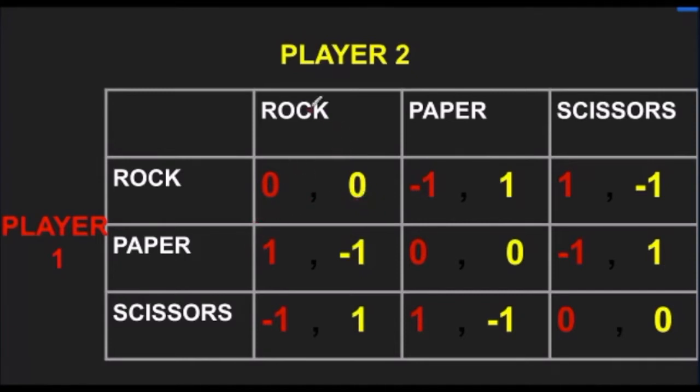But, let's suppose if player 2 chooses Rock and player 1 chooses Paper, then player 1 will win $1 and player 2 will lose $1. In this way all nine boxes of the game have been filled.